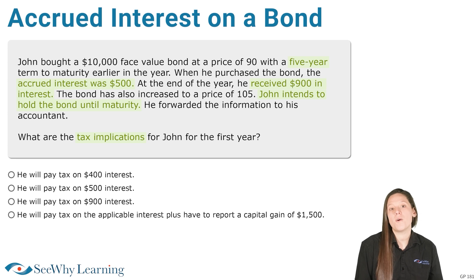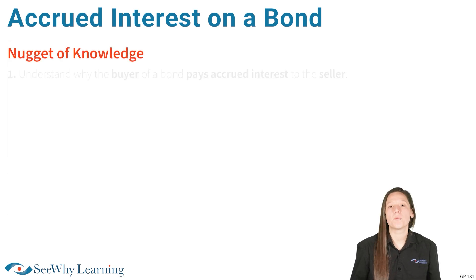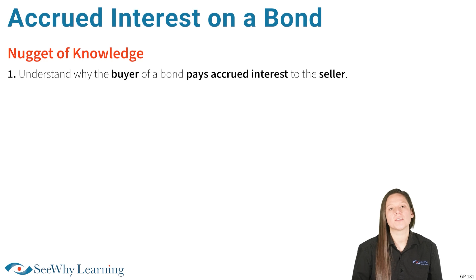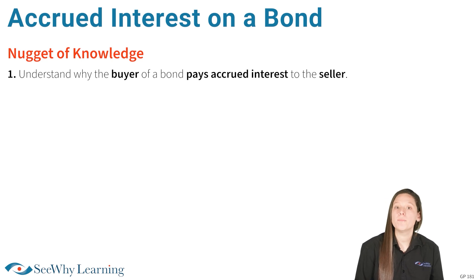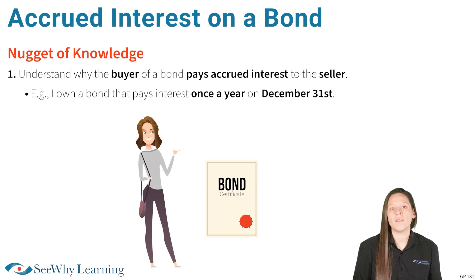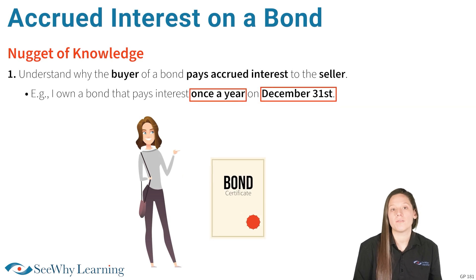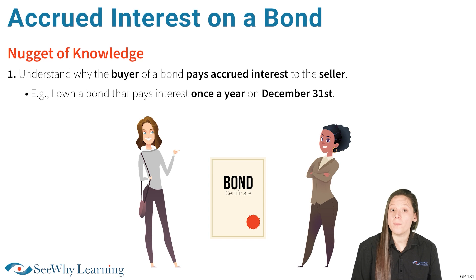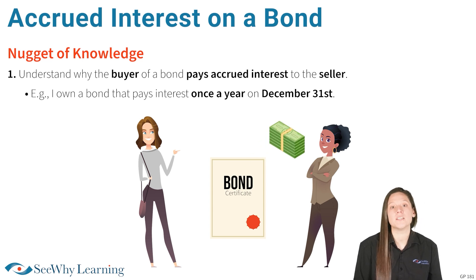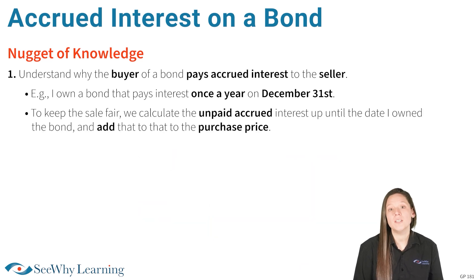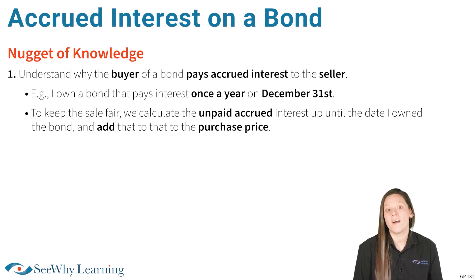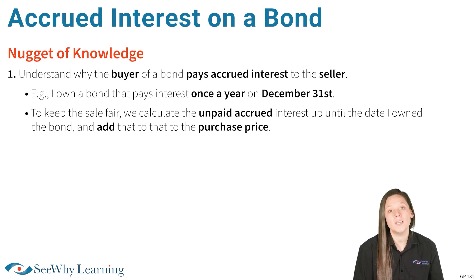One quick nugget of knowledge will position us well to tackle this question. Nugget number one: understand why the buyer of a bond pays accrued interest to the seller. An example will clarify. Let's assume I own a bond that pays interest once a year on December 31st. If I sold the bond to you in November, on the next interest payment date, you would get the full interest payment as the new owner. That obviously wouldn't be fair to me. So we would calculate the unpaid accrued interest up until the date I owned the bond and add that to the purchase price, knowing that on December 31st you will receive the full year's interest payment, which would be more than the accrued interest you paid to me.